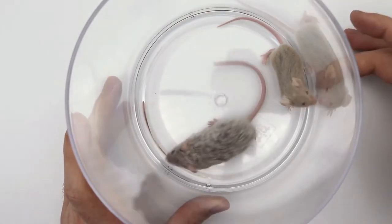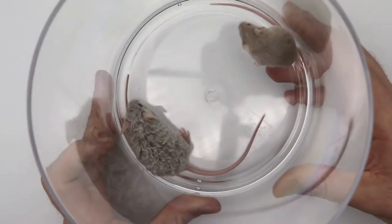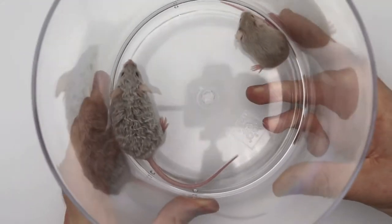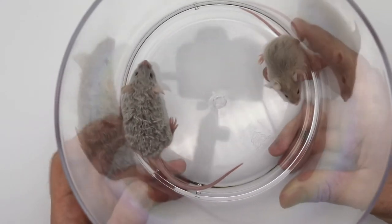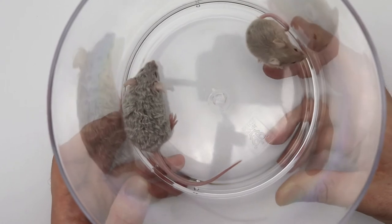So you can see that this smaller one over here is the hybrid Micro Mice line, and this one over here is a more average sized mouse, but they are about the same age.